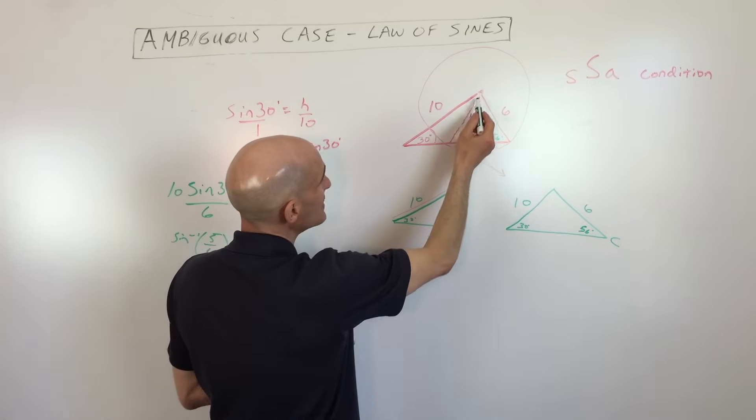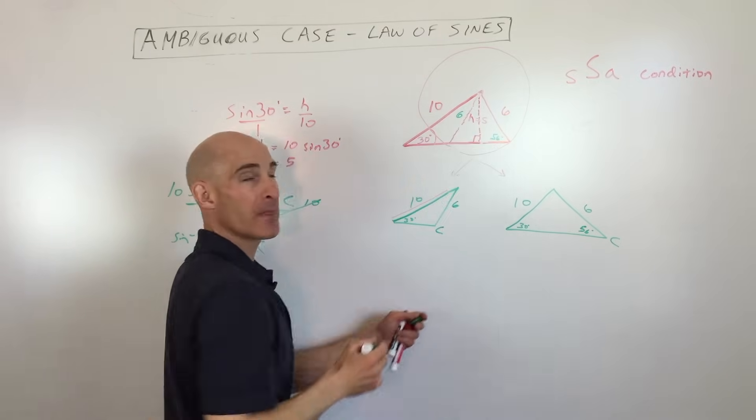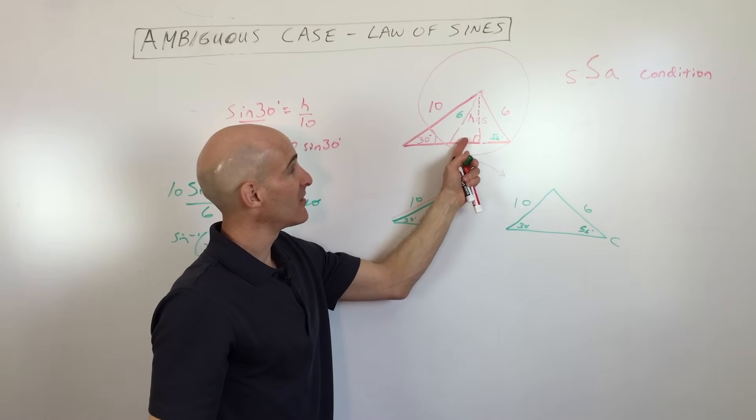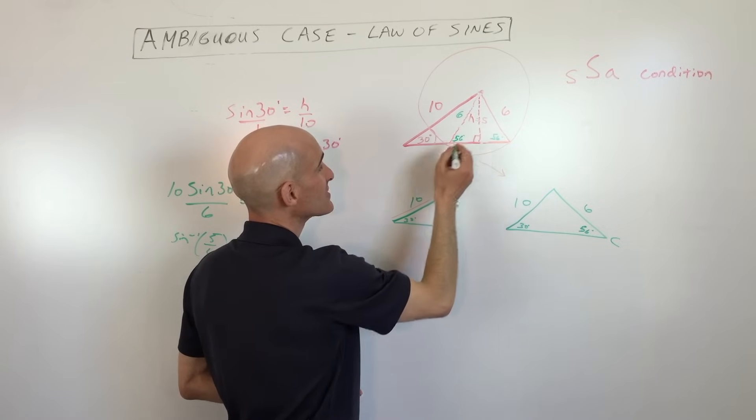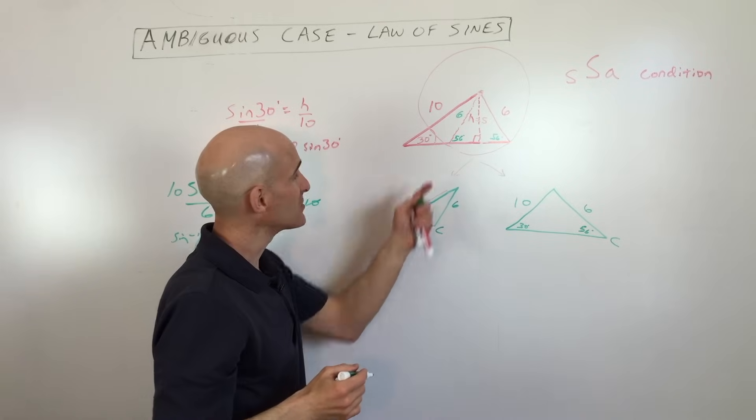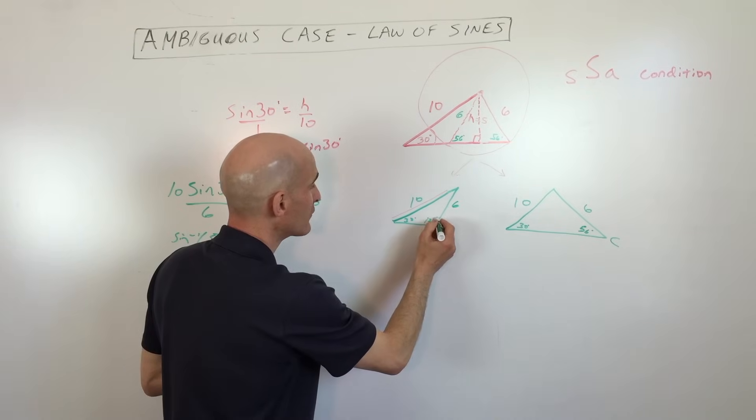And what you'll notice is, you see how this is an isosceles triangle? Like if this is six, this is also six. What do you know about the base angles of an isosceles triangle? They're congruent, right? So if this is fifty-six, this must be fifty-six. Which means that this angle here must be a hundred and eighty minus fifty-six. So that's going to be one hundred and twenty-four. So this is a hundred and twenty-four.